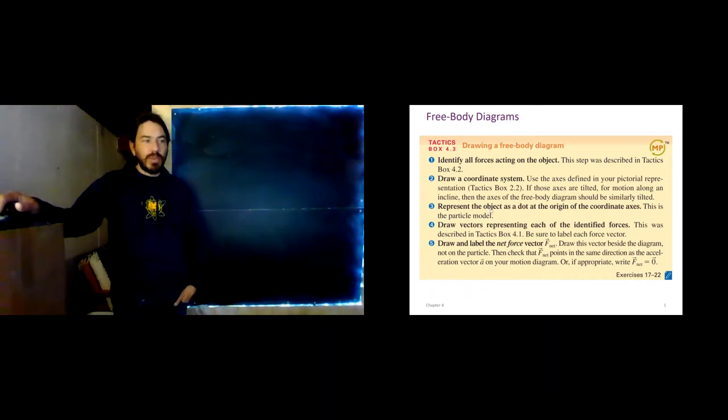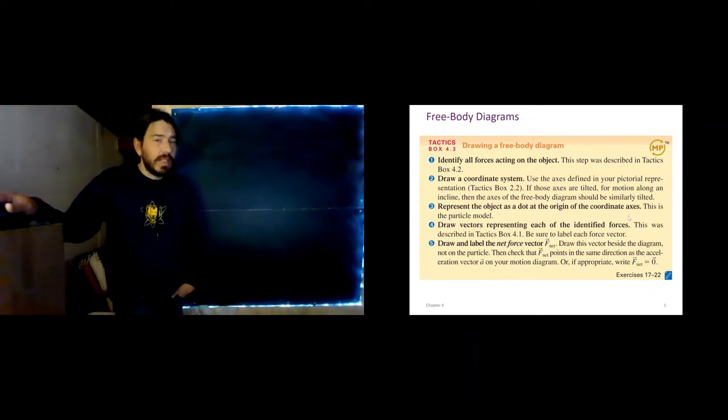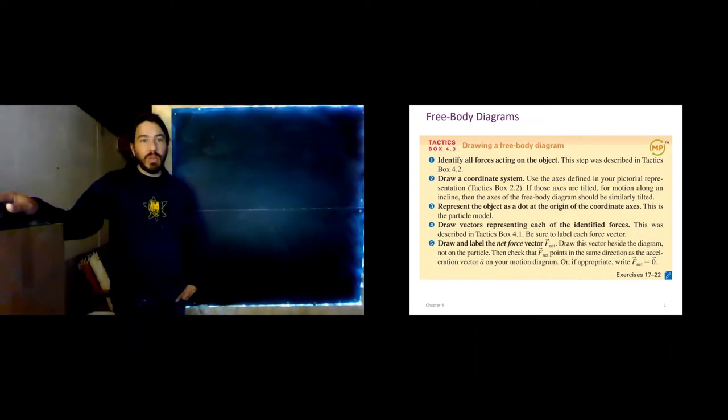We're going to use the particle model. So, represent the object as a dot. Now, your book says to do that at the origin of the coordinate axes. And if you work through the examples in your book, which I recommend you do, then that's how they draw it there. Personally, I find that it makes it a little more cluttered. And for me personally, I prefer to draw my coordinate axes off to the side. And I will do that as we go through. And then we're going to draw vectors representing each of the identified forces. And then we'll identify and label the net force vector.